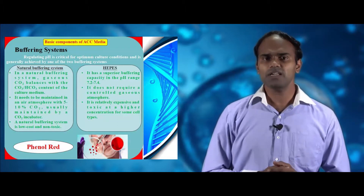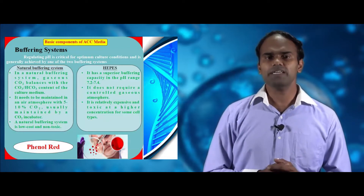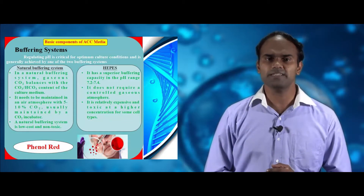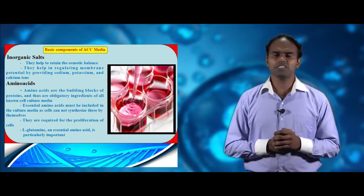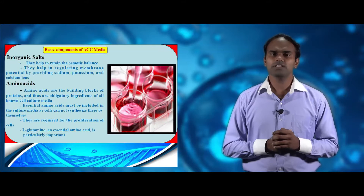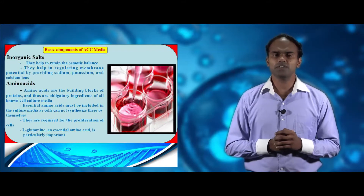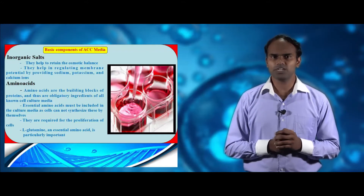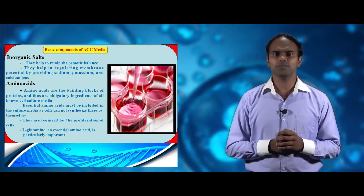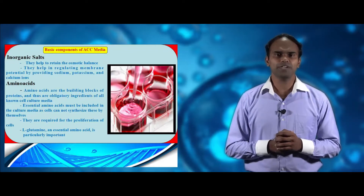HEPES has a superior buffering capacity in the range of pH 7.2 to 7.4. It does not need any controlled air atmosphere, but it is relatively expensive and slightly toxic to certain types of cells. In general, all media contain phenol red as a pH indicator. Now we see about inorganic salts.